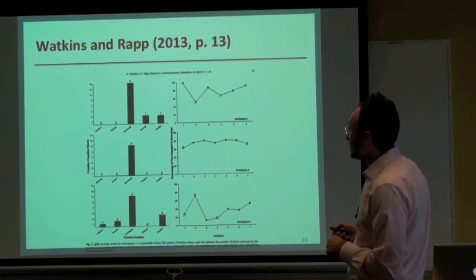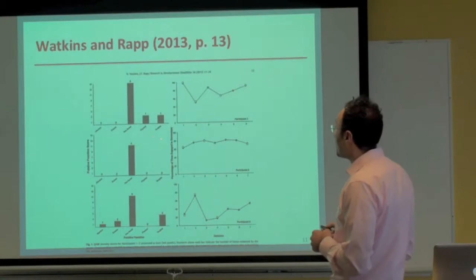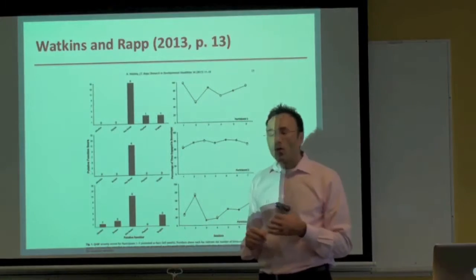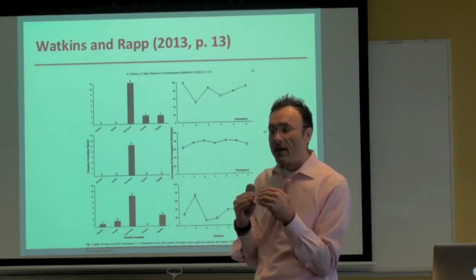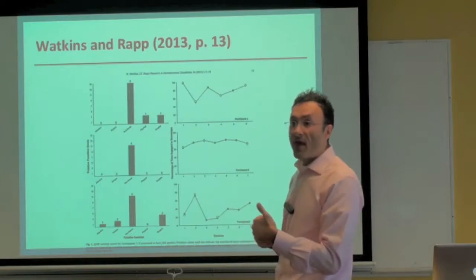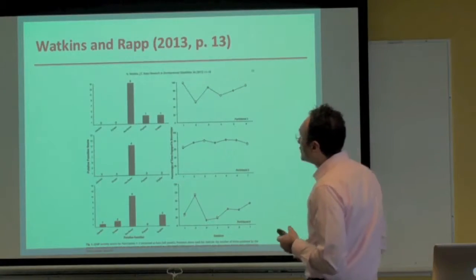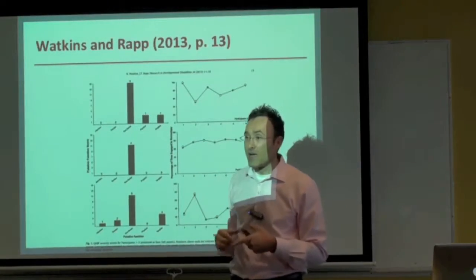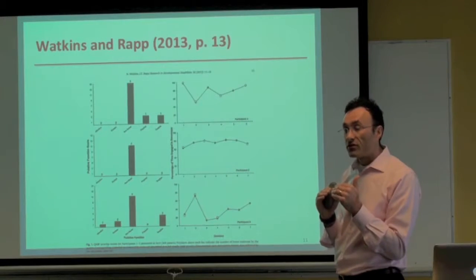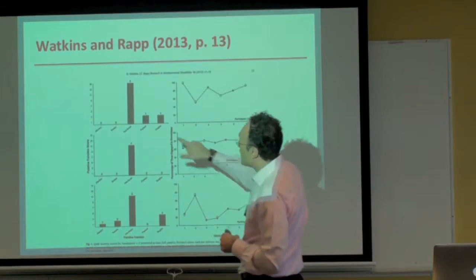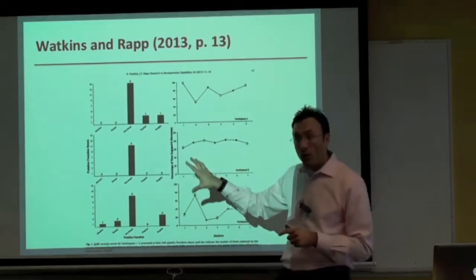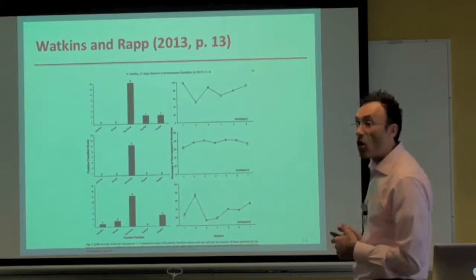Above each bar is the endorsement score. According to the QABF administrative manual, every time a parent answers a question with a score of one, two, or three — not zero — we score affirmation that the question relates to the function. The highest possible endorsement score is five. According to the decision rubrics, any function with a score of four or five, with no other function scoring above three, suggests that function. Here we see scores of five with no other function higher than three, so I would conclude the likely function is automatic reinforcement.